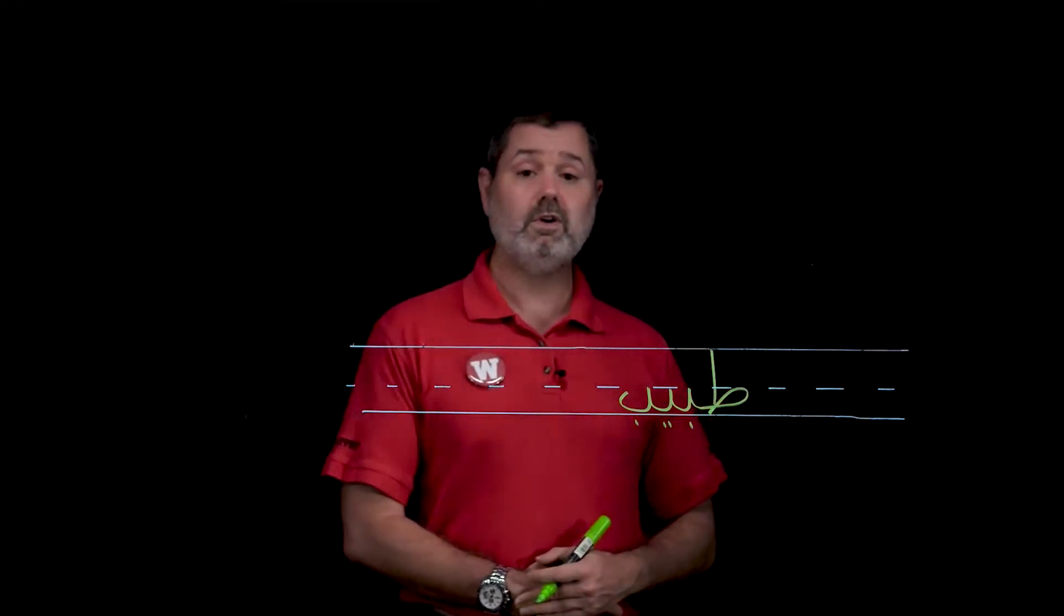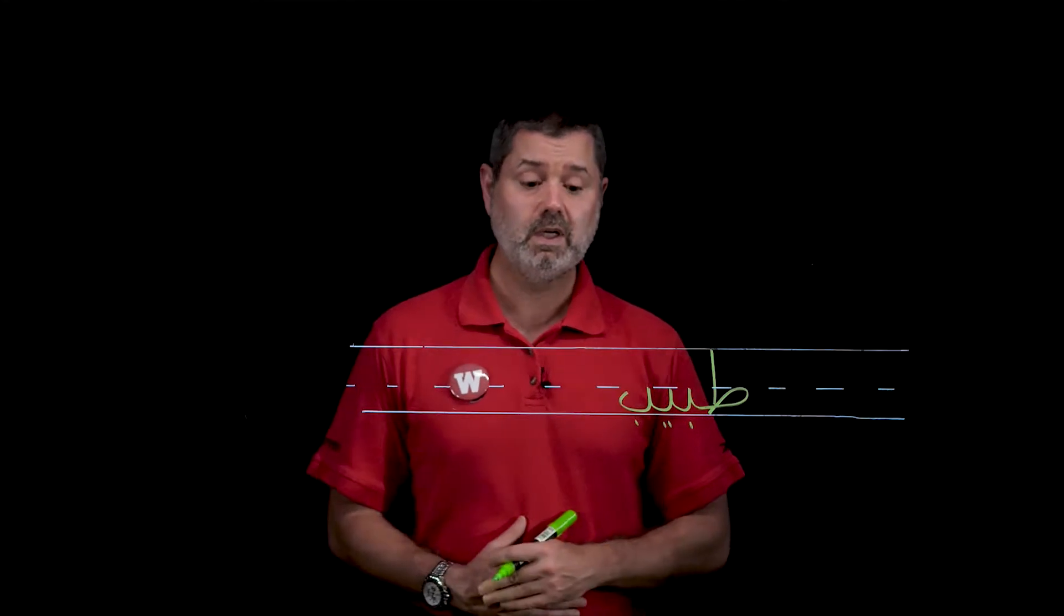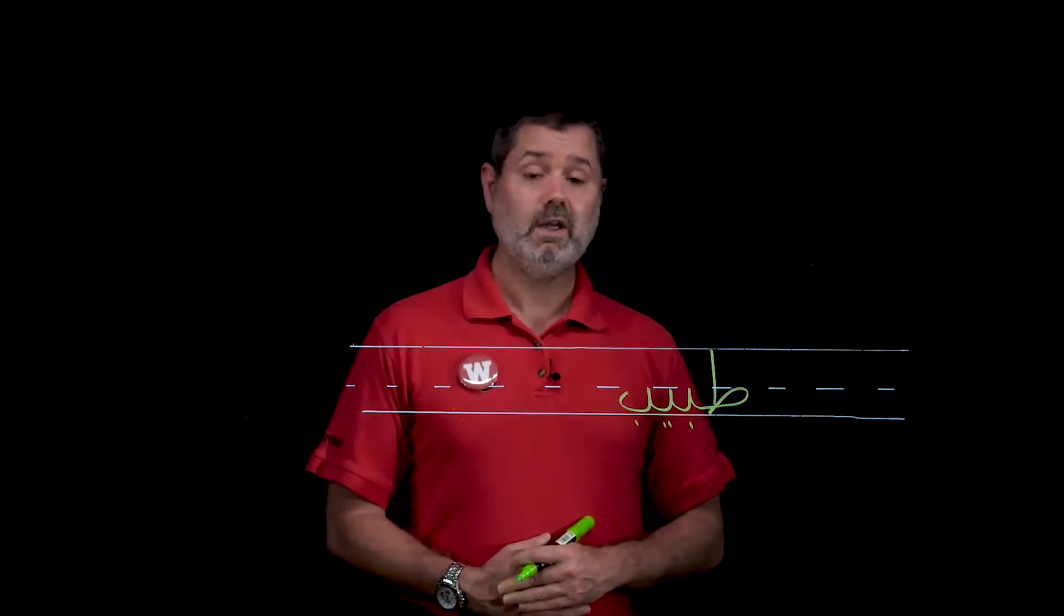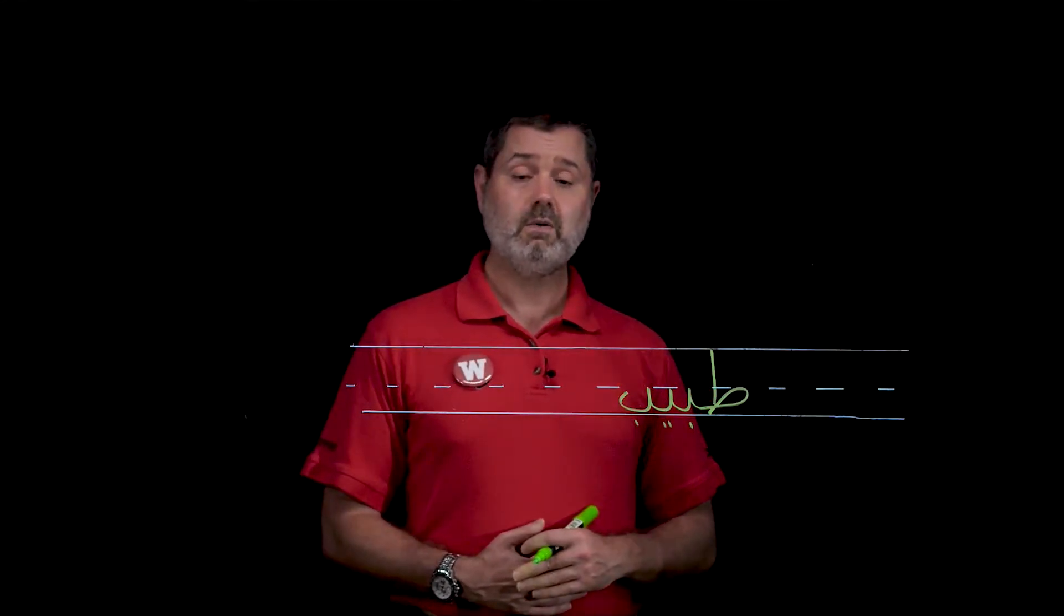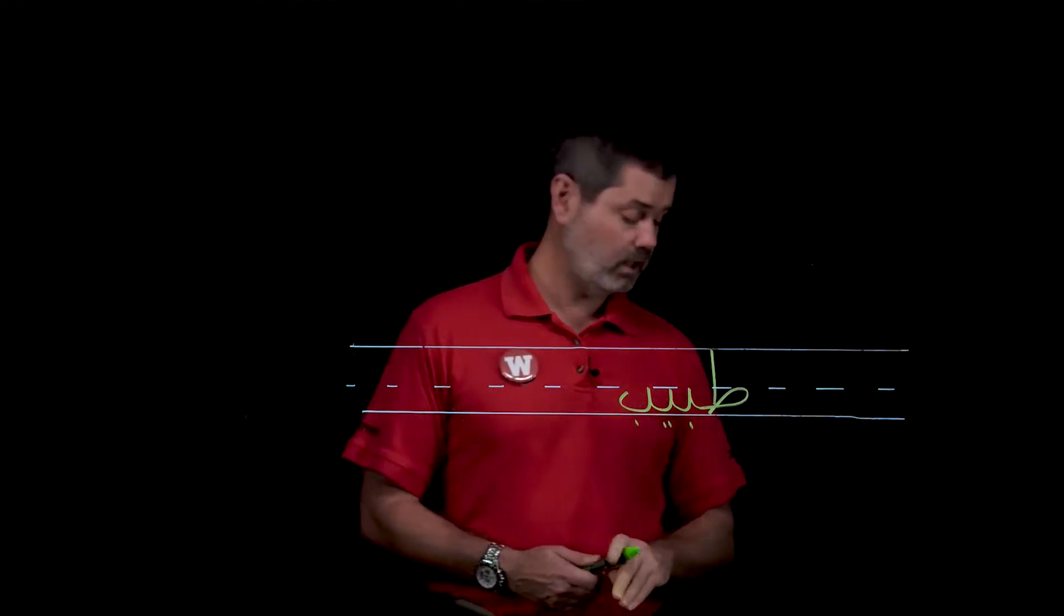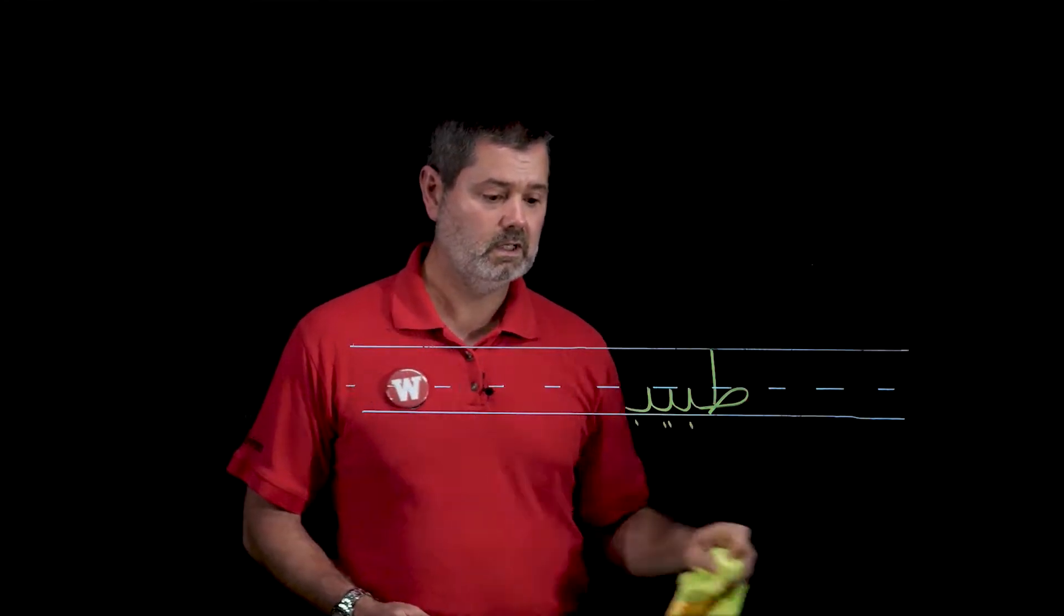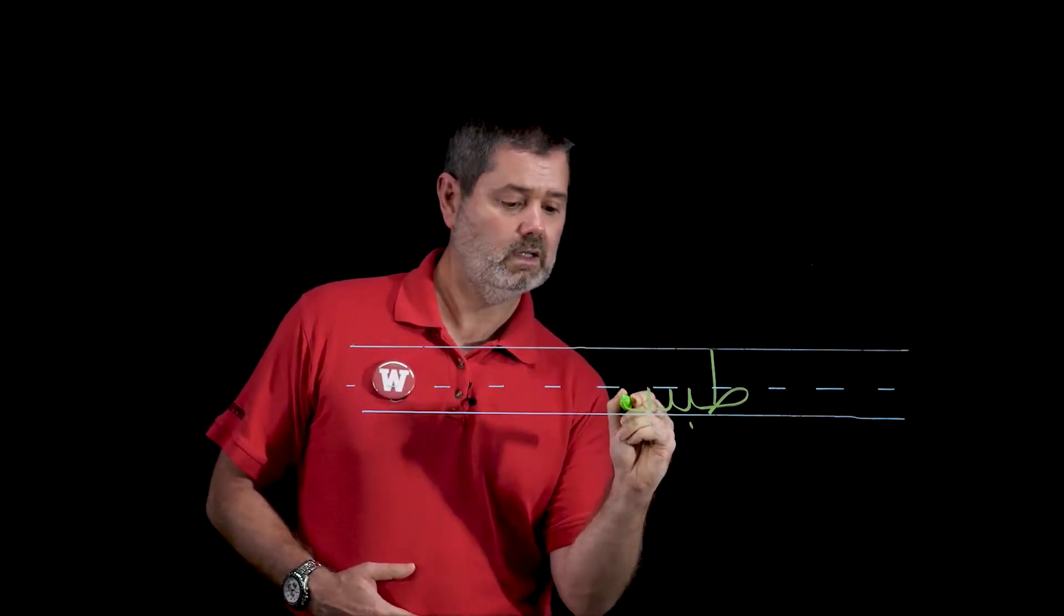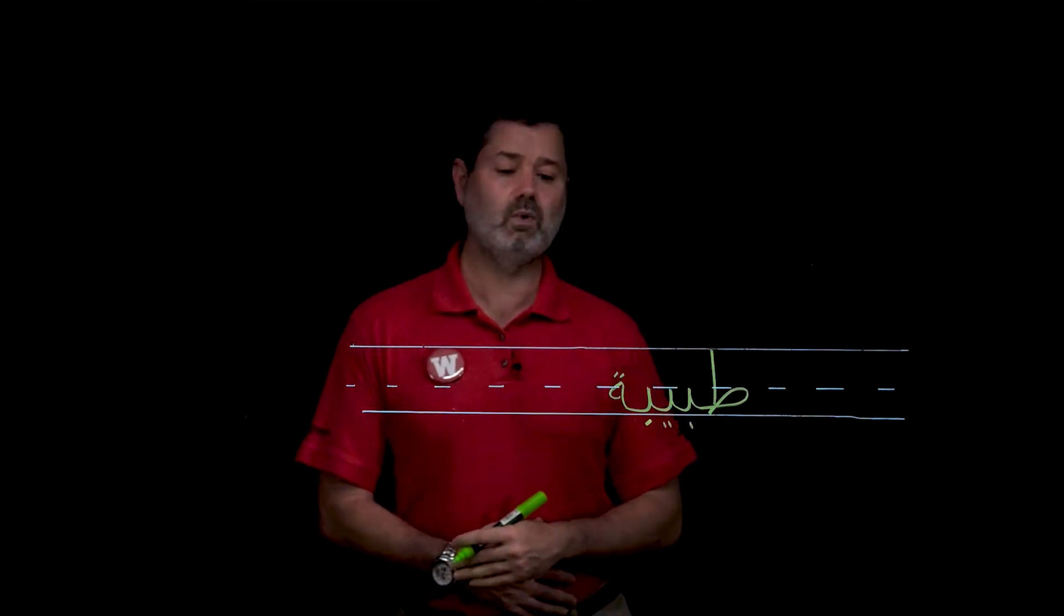Here I have a word that you saw earlier in this lesson. This is the word tabib. Tabib means doctor. Now, as I said, we can only put tamabuta on the end of the word, so I'm going to put it on the end of this word here. That requires me to make a slight adjustment to my ba.